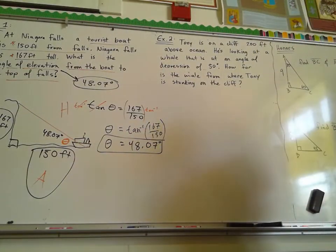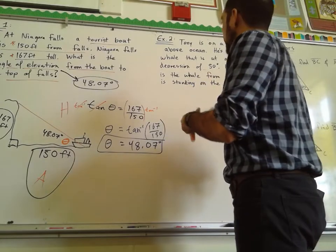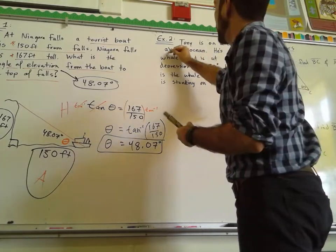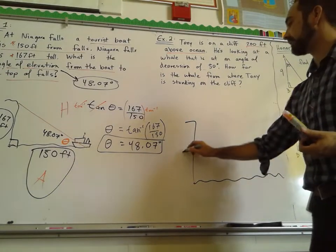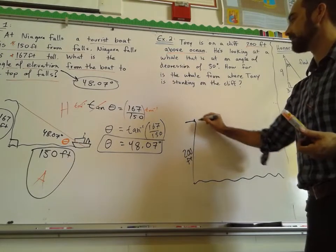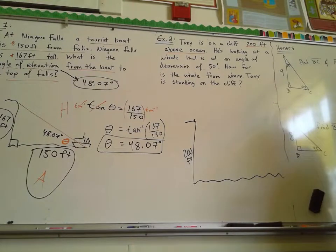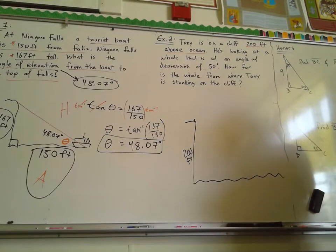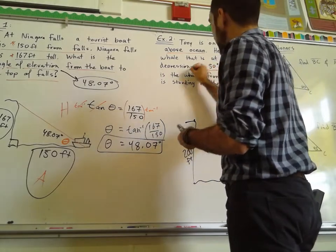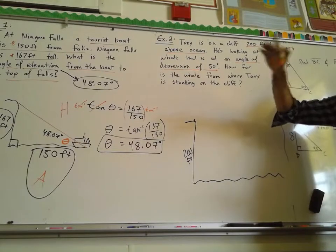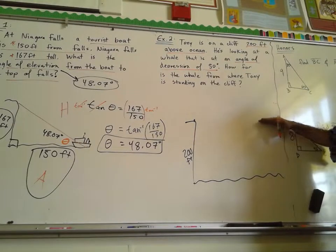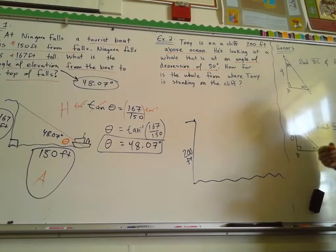Next one. Tony is on a cliff 200 feet above the ocean — underline 200 feet. He's 200 feet above the ocean, standing on a cliff. He's looking at a whale at an angle of depression of 50 degrees — that's important. Angle of depression at 50 degrees. Think of what the angle of depression is: if he's looking straight out, it's how far you're looking down. How far is the whale from where Tony is standing on the cliff?